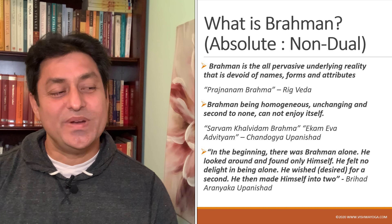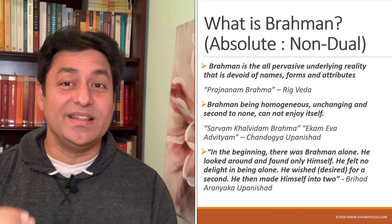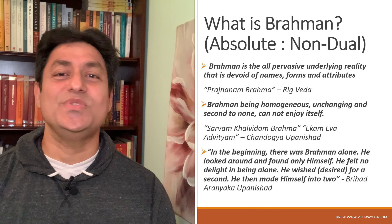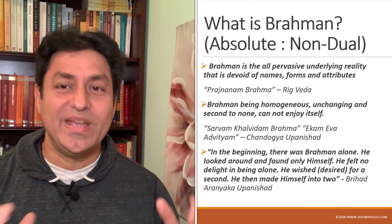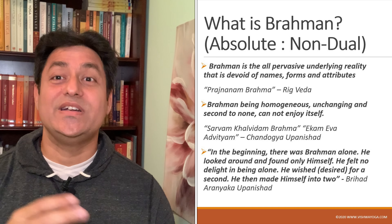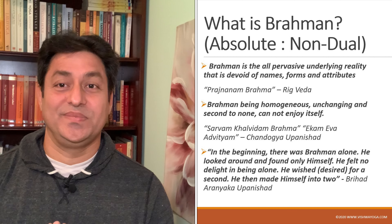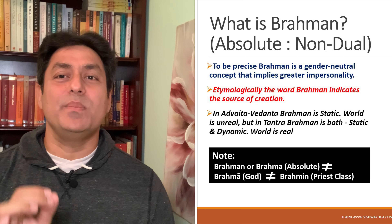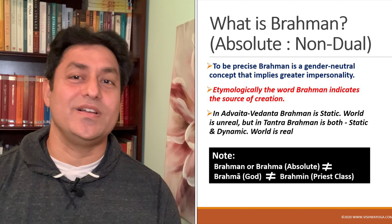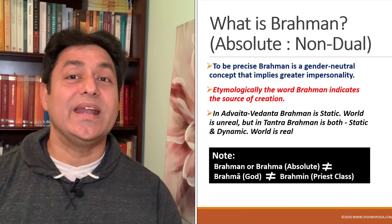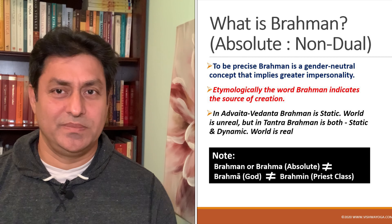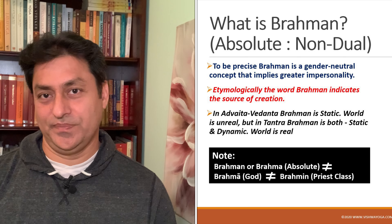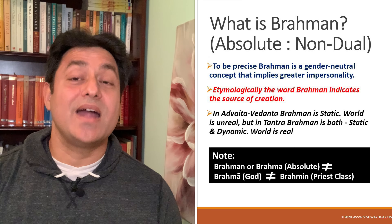About creation, Upanishad says in the beginning there was Brahman alone. He looked around and found only himself. He felt no delight in being alone. He wished or desired for a second. He then made himself into two. To be precise, Brahman is a gender-neutral concept that implies greater impersonality. Etymologically, the word Brahman indicates the source of creation, but there are different perspectives.